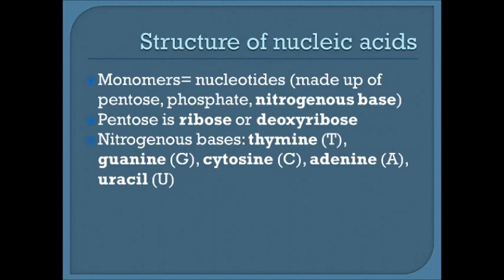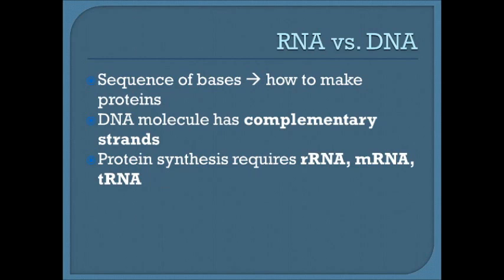There are five nitrogenous bases: thymine, guanine, cytosine, adenine, and uracil. DNA uses the first four: thymine, guanine, cytosine, and adenine. RNA uses the last four: guanine, cytosine, adenine, and uracil. The sequence of nitrogenous bases in DNA tells RNA how to make proteins. DNA molecules have complementary double strands, while RNA is single-stranded. In DNA, adenine pairs with thymine (A-T), and cytosine pairs with guanine (C-G) — always.